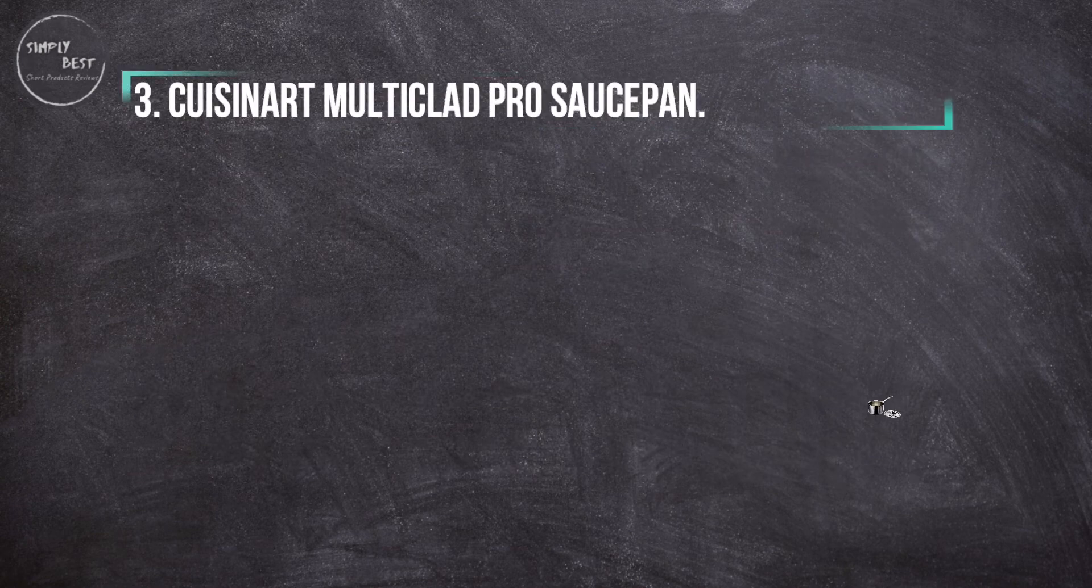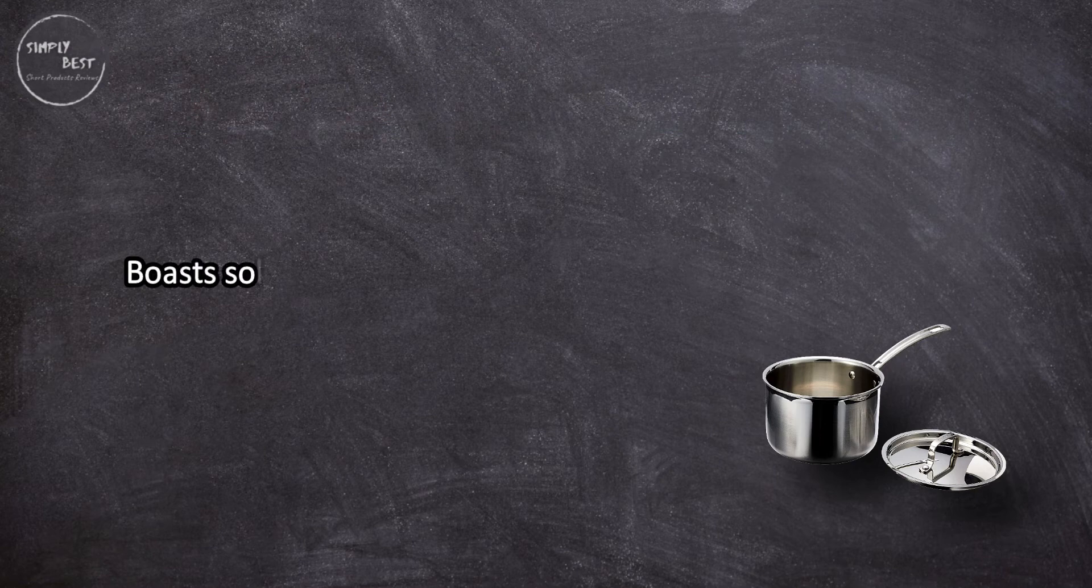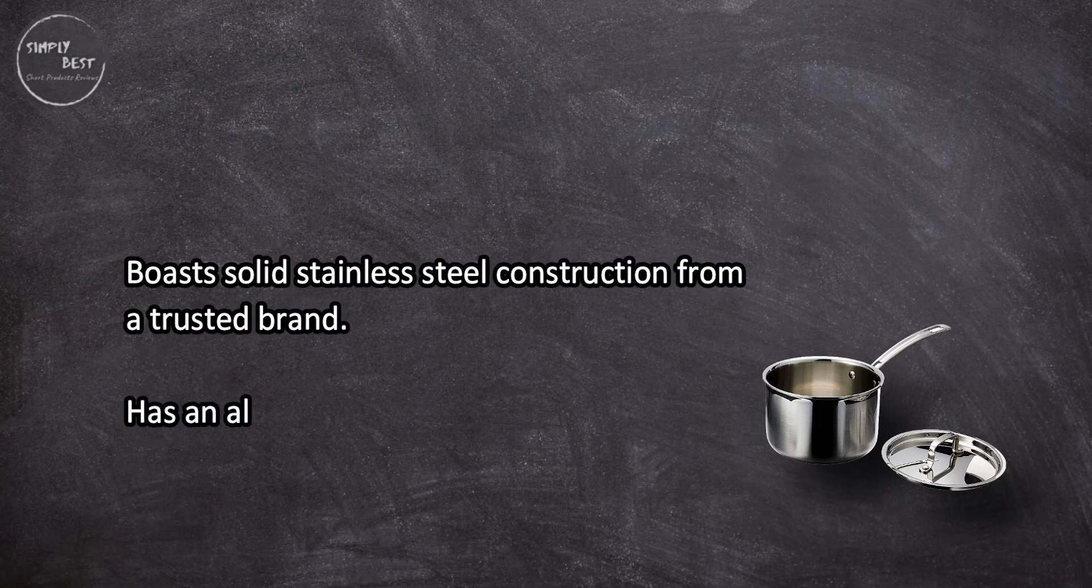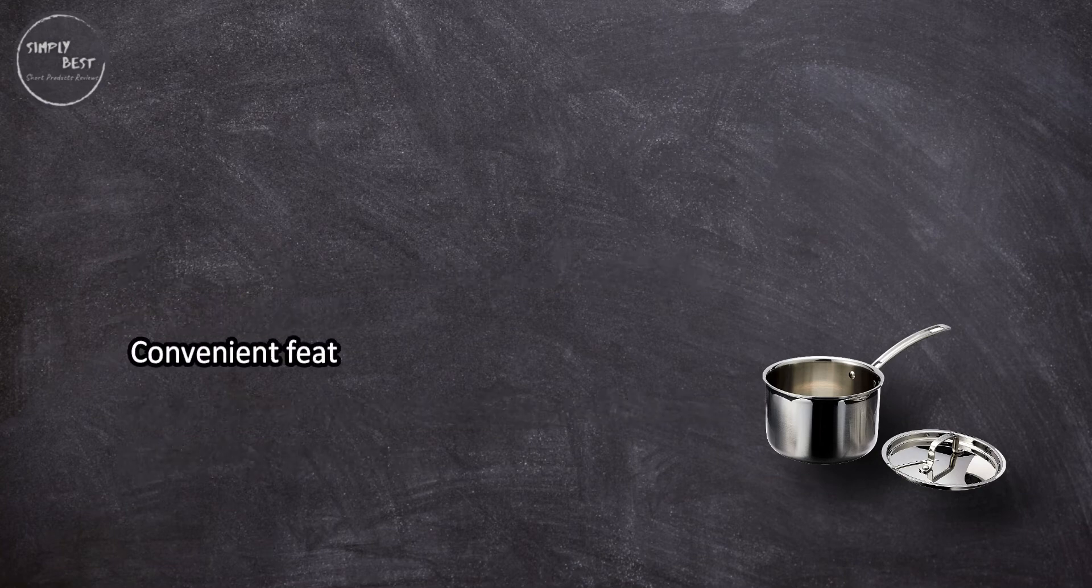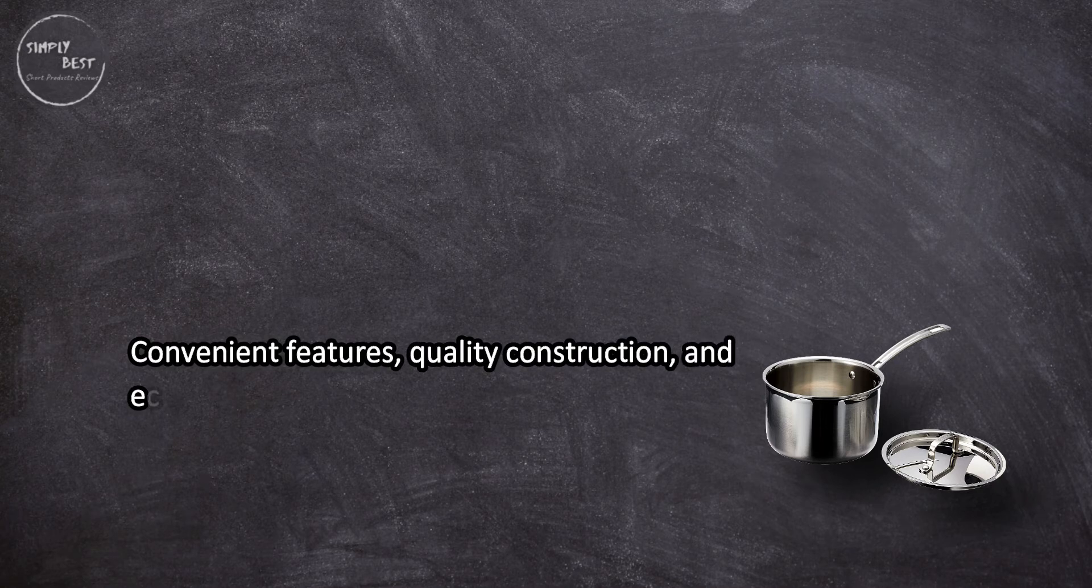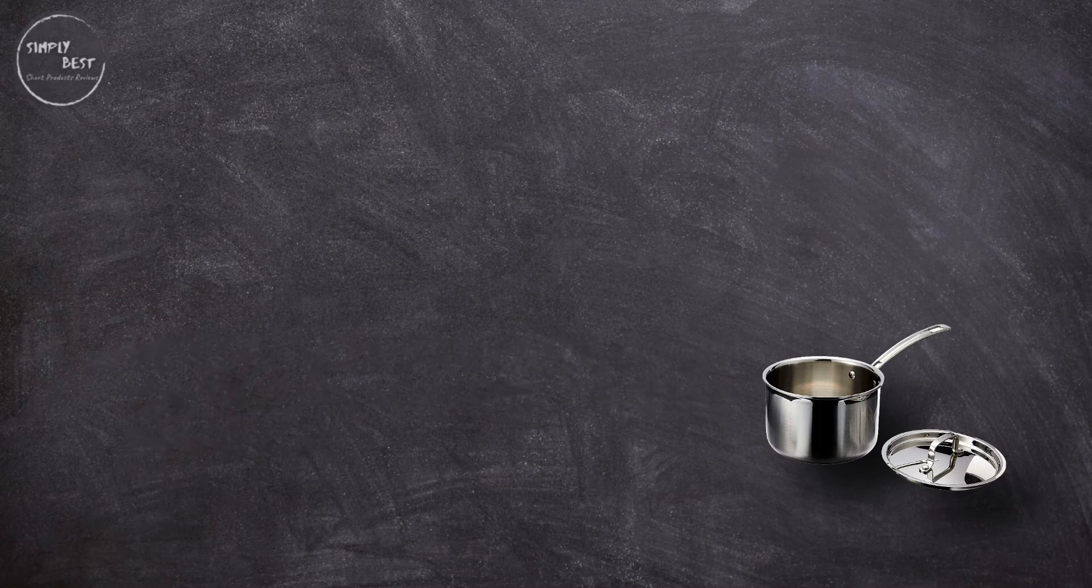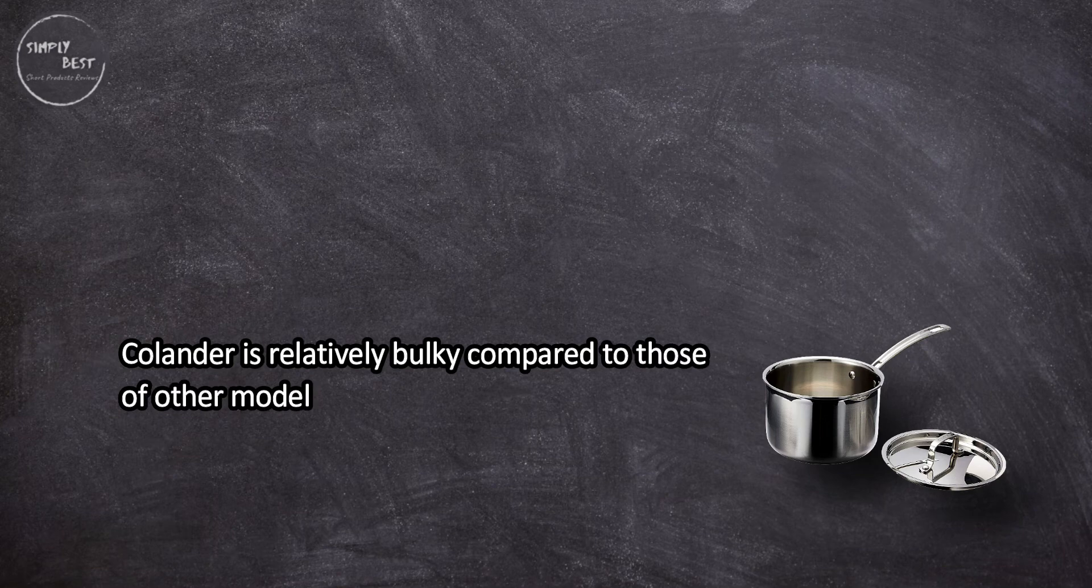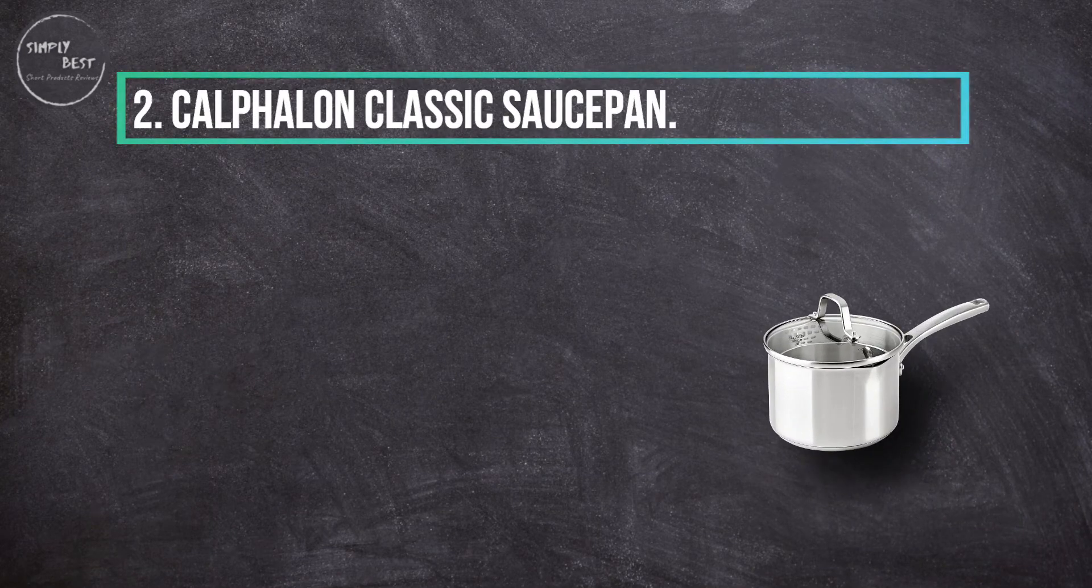At number three, Cuisinart MultiClad Pro Saucepan boasts solid stainless steel construction from a trusted brand, has an aluminum core and tapered rim for optimal performance. Convenient features, quality construction, and economical price earned the top spot for value on our shortlist. Colander is relatively bulky compared to those of other models.